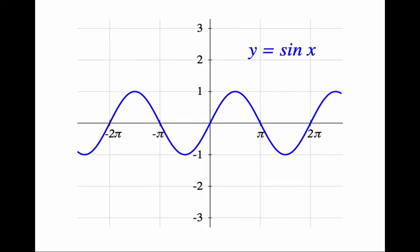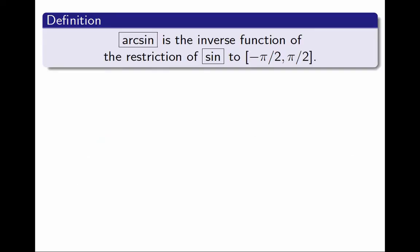We can restrict it to a smaller domain to make it 1 to 1. We keep only the function represented by this piece of the graph in red, and then it is 1 to 1. We define arcsine as its inverse, as the inverse of the restriction of sine to the interval inclusive.